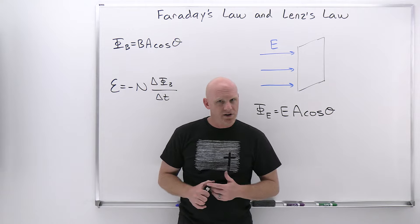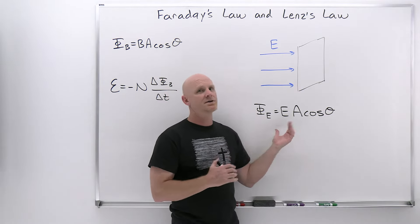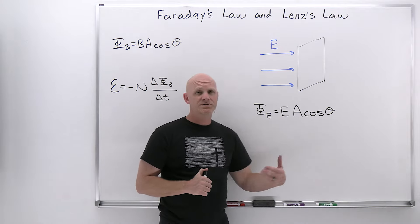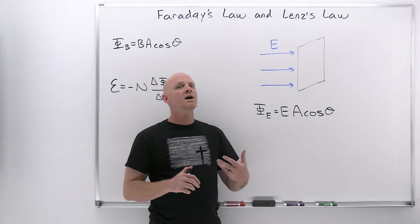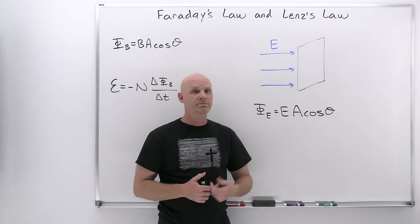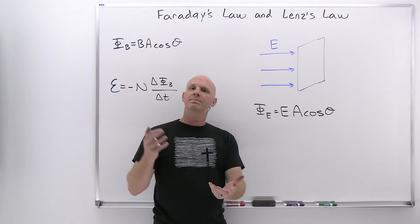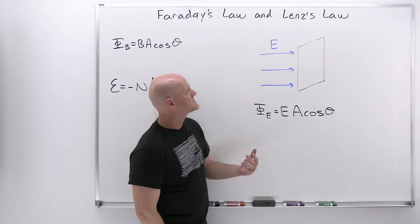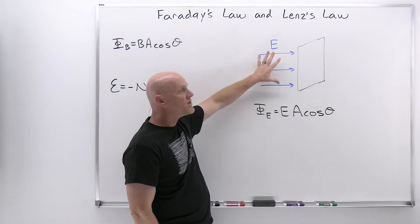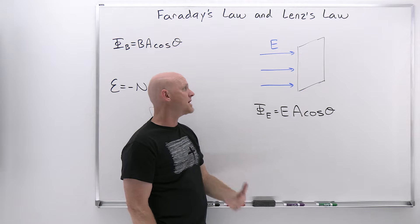Before we define magnetic flux, we're going to do a quick review of electric flux from a few chapters ago. Electric flux was related to the number of electric field lines passing through a surface — it could be a real surface or some imaginary surface where we applied Gauss's Law. The more field lines that pass through a surface, the greater the electric flux.